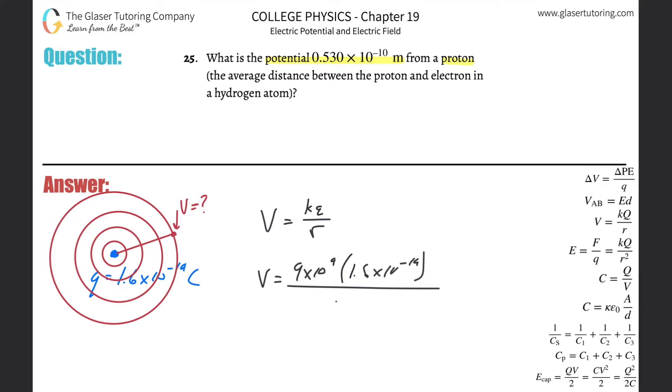My handwriting is getting crazy right now. Divided by the distance, a.k.a. the radius, of 0.53 × 10^-10.